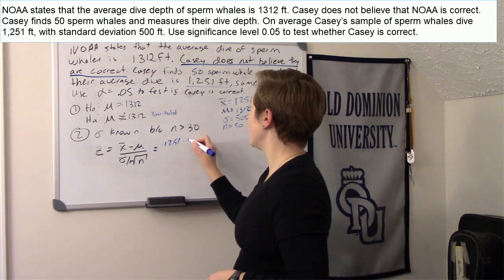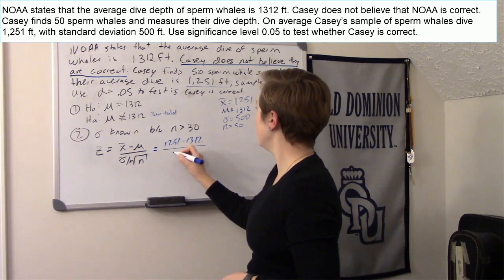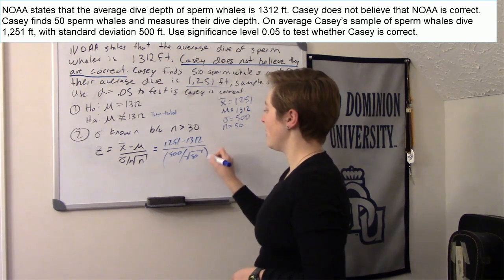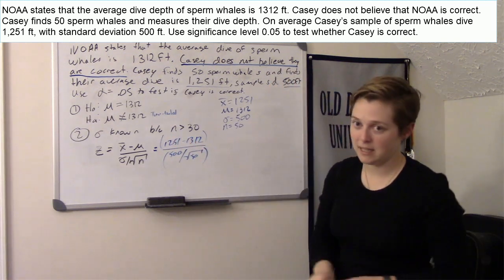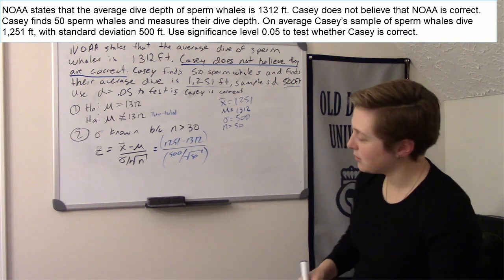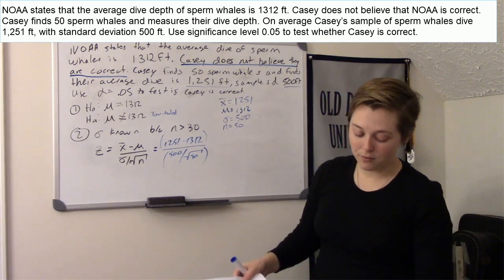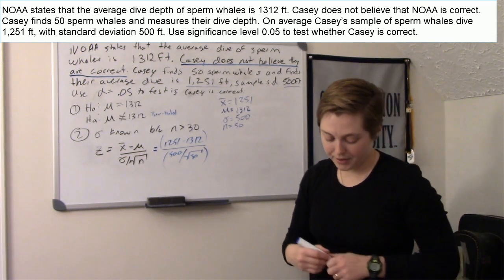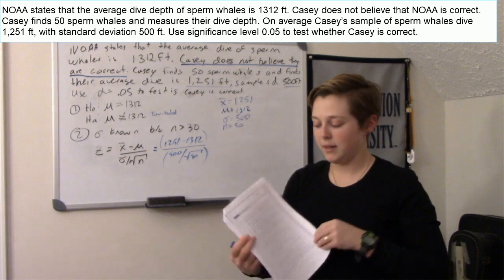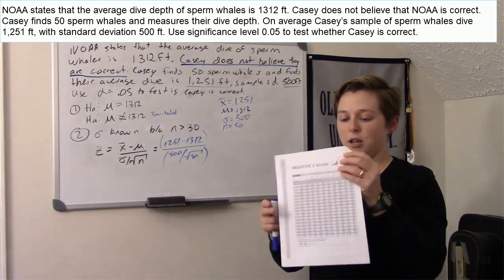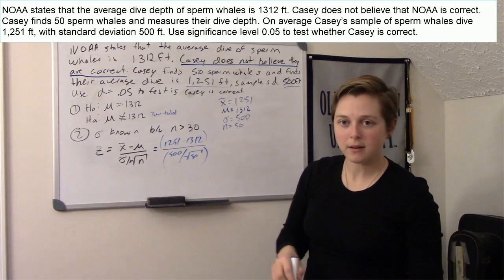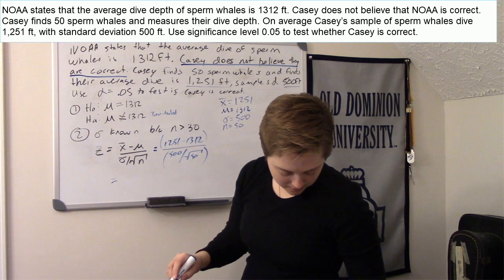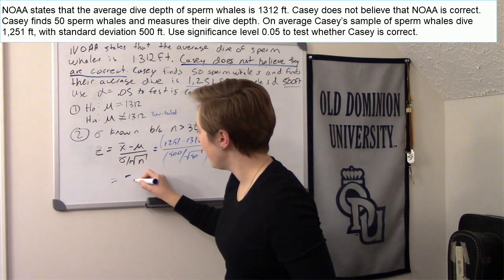Plugging everything in: z equals (1,251 minus 1,312) divided by (500 over square root of 50). Remember to put the numerator and denominator in parentheses in your calculator, and try not to round the denominator or it may affect your z value. You need z accurate to two decimal places. This equals negative 0.86.